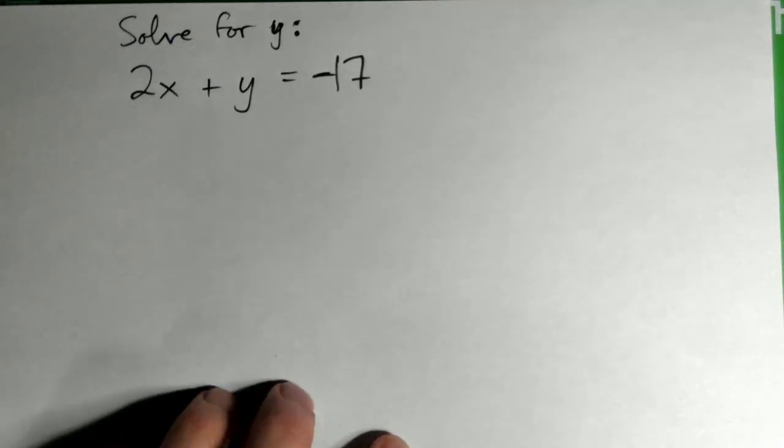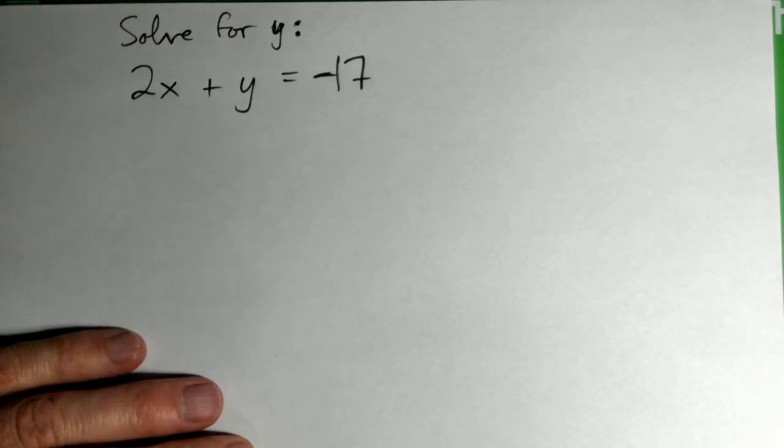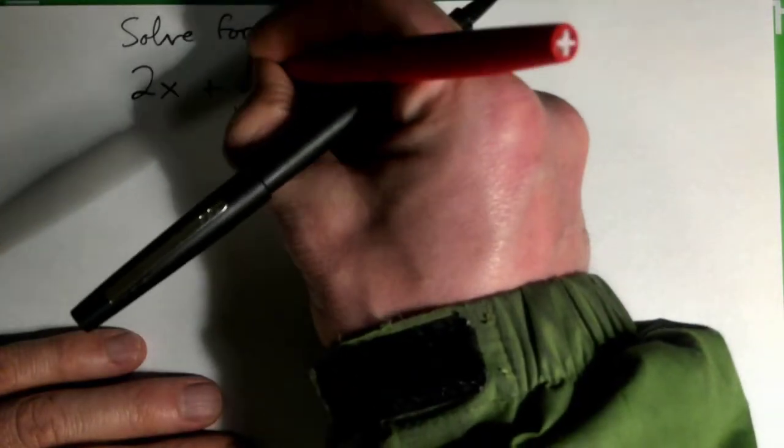So we're going to solve this fella for y, right? 2x plus y equals negative 17. So we need to solve that for y, okay?